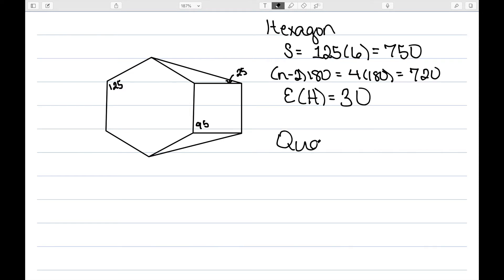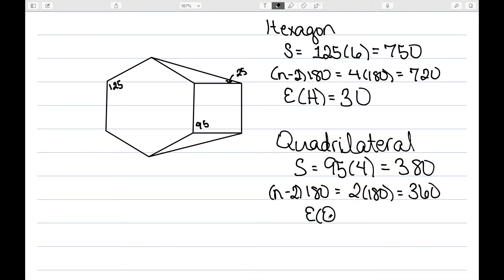Next, let's look at the quadrilateral. The quadrilateral has angles of 95, and there are four of them. That gives me that the angle sum is 380. On the other hand, if we do n minus two times 180. In this case, n is four, so we would have two times 180. Or 360. So the excess of my quadrilateral is going to be 380 minus 360, which is 20.